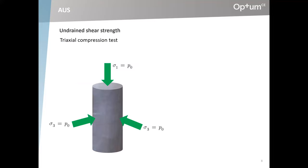The TRESCA model requires that we determine the undrained shear strength. That can be done in situ with CPT or in the lab. If we do it in the lab, we might set up a triaxial compression test — a cylindrical sample of clay subjected to hydrostatic pressure, allowed to consolidate. Once the initial pore pressures have dissipated, we ramp up the vertical stress until the sample fails. It fails when the difference between sigma one and sigma three reaches a critical magnitude.